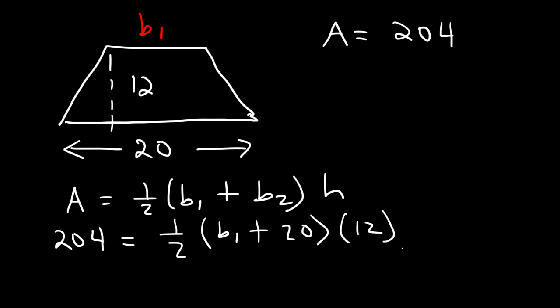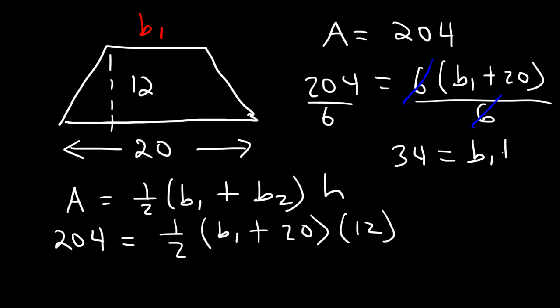So now all we need to do is find the value of b₁. So let's multiply 1/2 by 12. Half of 12 is 6. So now 204 is equal to 6(b₁ + 20). Now the next thing I would do is divide both sides by 6. So on the right side, we no longer need the parentheses. 204 divided by 6 is 34. So 34 is equal to b₁ + 20.